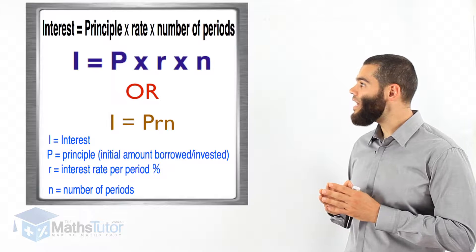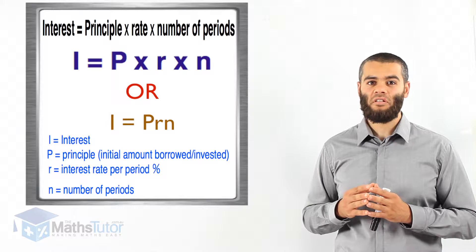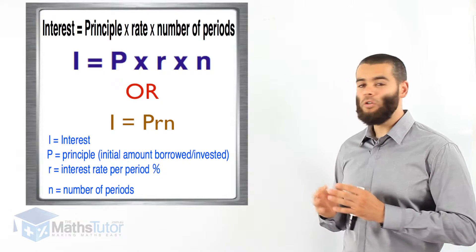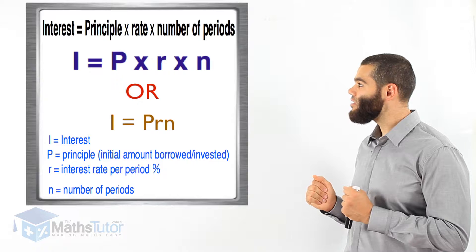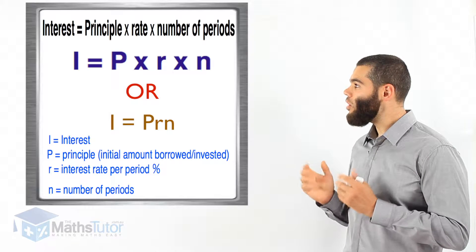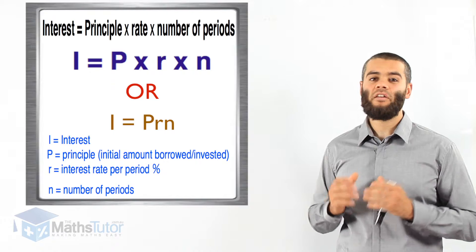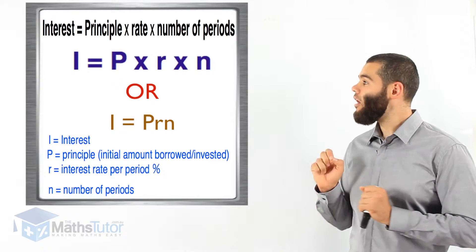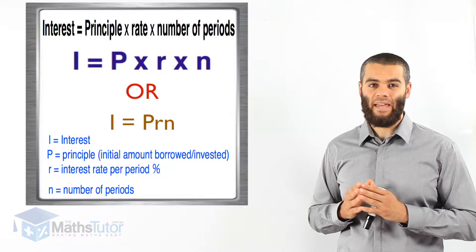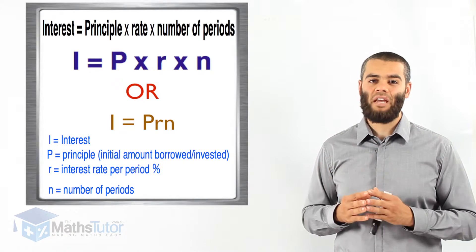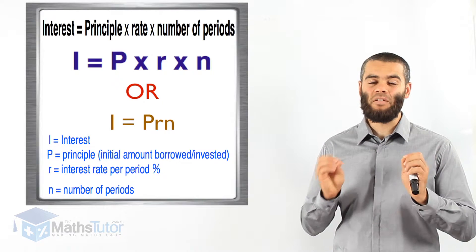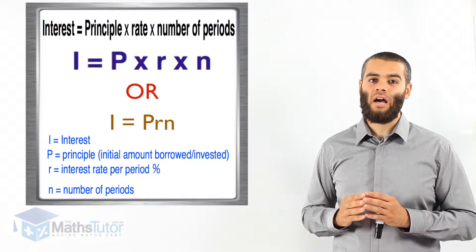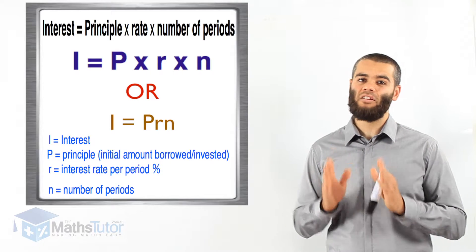Remember this formula: I = PRN, that is I equals P times R times N. Whenever you're asked to work out the simple interest or the flat rate interest, straight away remember I = PRN. That's the formula you're going to be using to find I, which stands for interest.